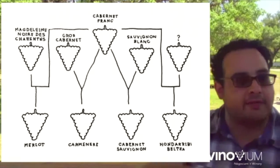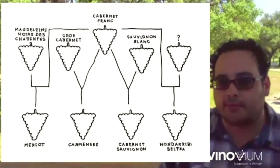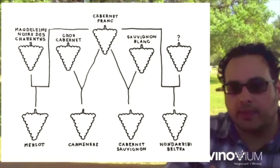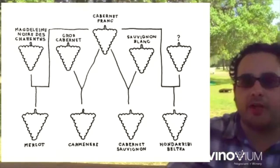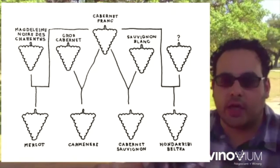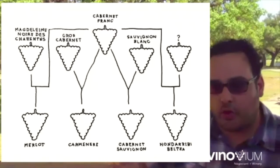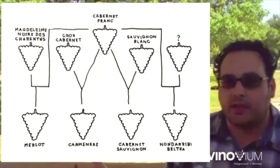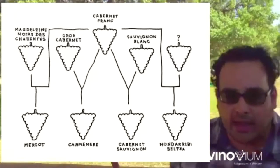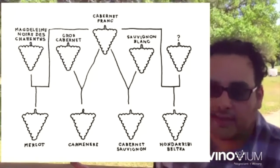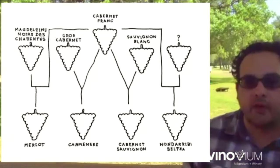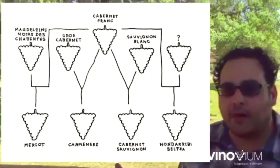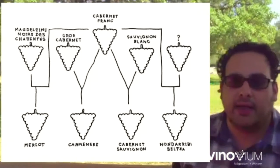Cabernet Franc as a varietal is really indigenous to the border between Spain and southwest France. Ultimately, Cabernet Franc and some unknown varietal creates what is known as Hondarrabi Beltza — the grape used in Txakoli. So we know Cabernet Franc originates from this part of the world; we just don't know exactly what its other crossing is at this time.